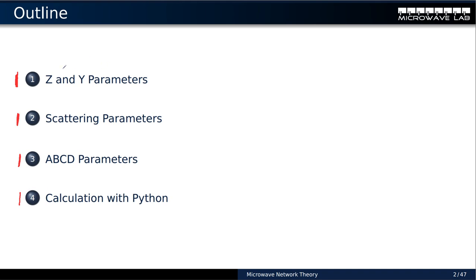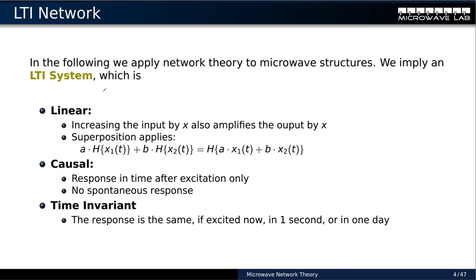Let's take a look first at our Z and Y parameters, which are still known from your bachelor undergrads. Before we jump into that, I have to clarify one more thing. The network theory we look into here is only for so-called LTI networks — linear time-invariant networks. That means we cannot apply it to nonlinear elements. What does LTI mean?